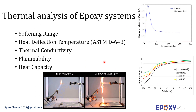We also have some other analytical tests for thermal properties. These tests include softening range, heat deflection temperature, thermal conductivity, flammability, and heat capacity. For example, in the flammability test we use a flame to see how the sample reacts when exposed to direct flame. For heat capacity we measure the heat capacity of the sample. Thermal conductivity is also measured, and for heat deflection we check the temperature at which heat deflection occurs in our system.